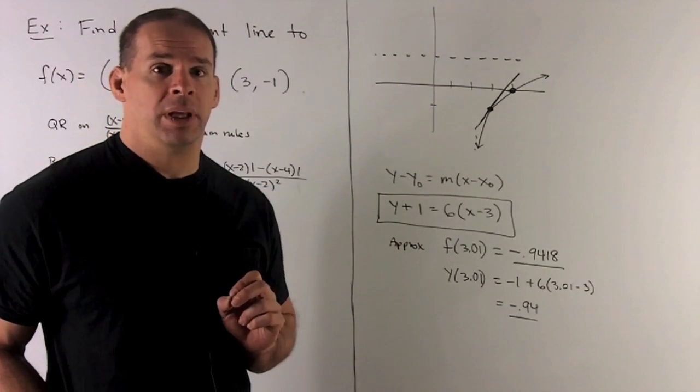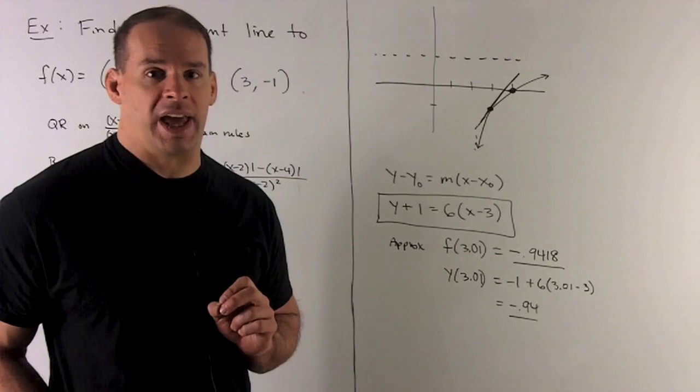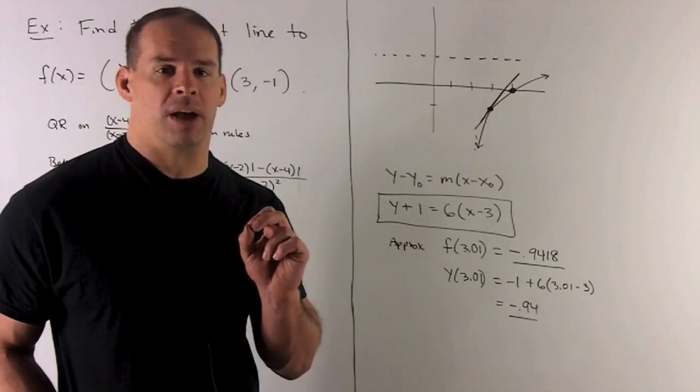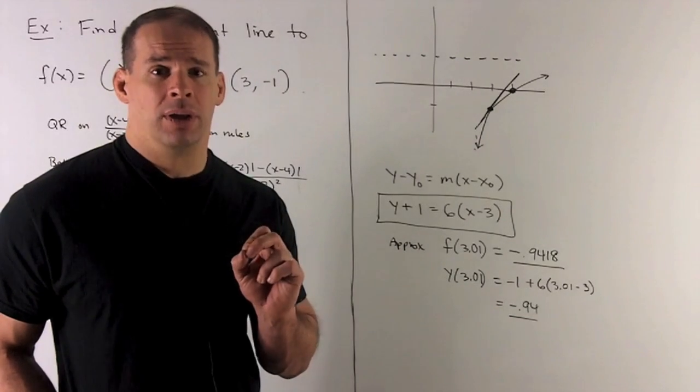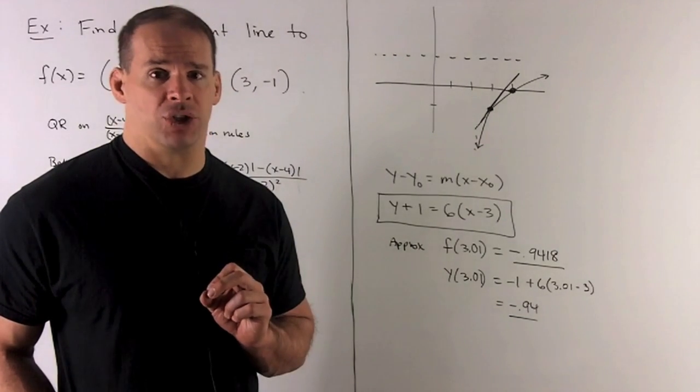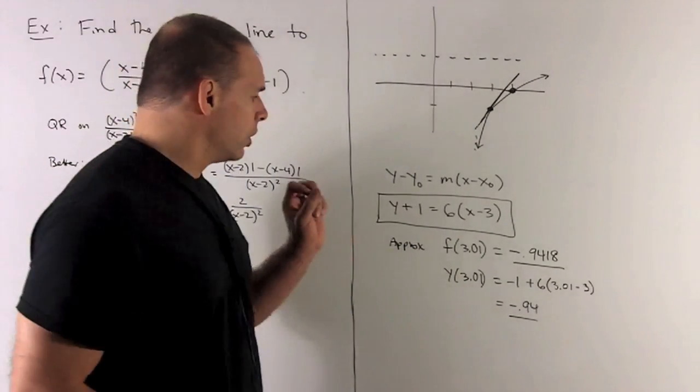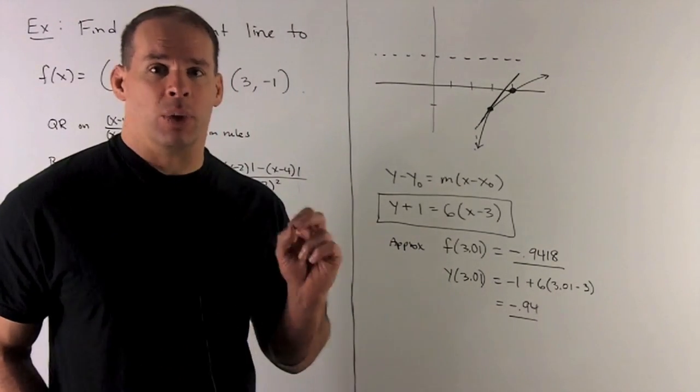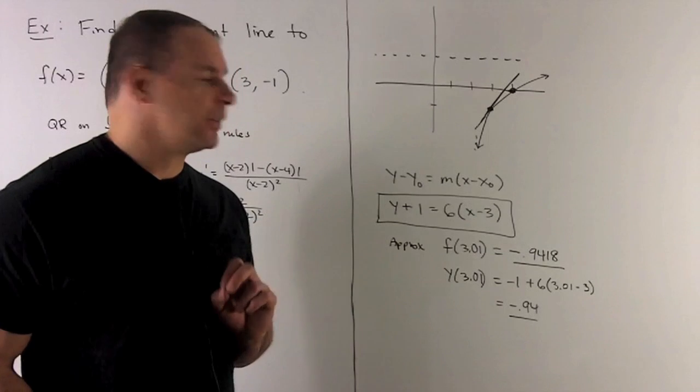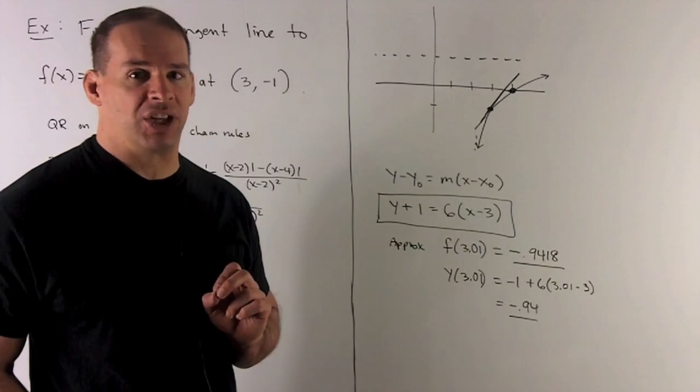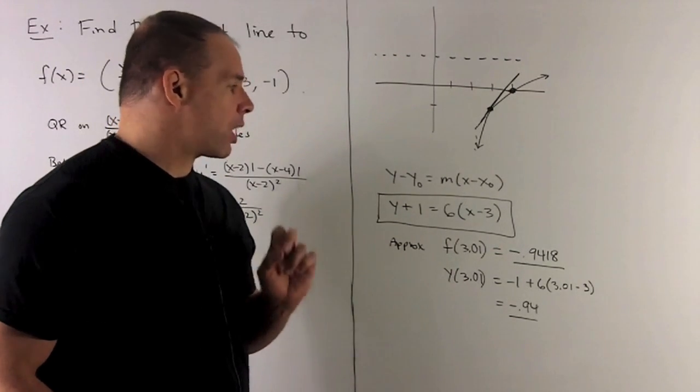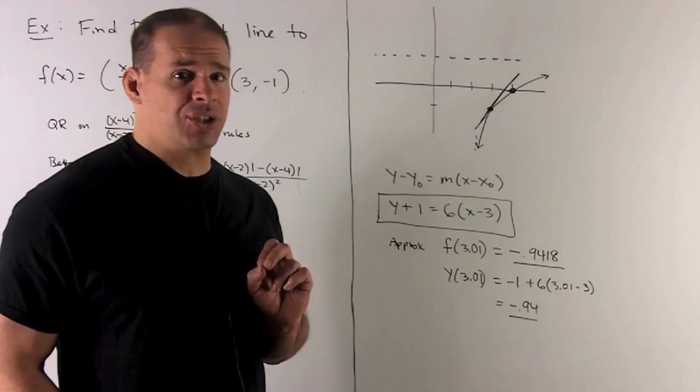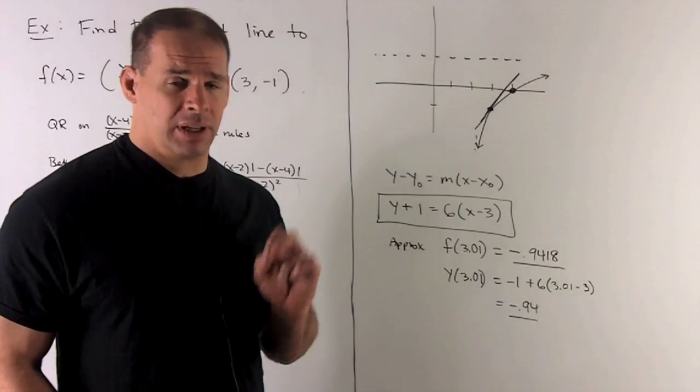If I wanted an application, let's say we want to approximate our function at 3.01. So, it's very close to 3, so we expect that the answer that comes out should be close to the actual answer of our function. For the actual function, I put 3.01 in. What comes out is minus 0.9418. We put 3.01 into the tangent line. We're going to get 0.94. So, that's very close to our actual answer. So, we probably have done this correctly.